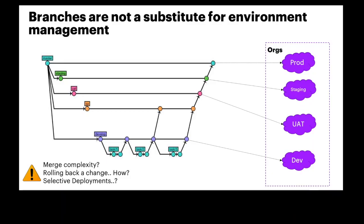A typical pattern we have seen across most Salesforce programs is basically using branches for orgs. So who is using source control with this model? We have seen this model where you have a developer branch which is directly pointed to a dev org, then you have a QA branch which is pointing to a QA org, and each environment is tied to a branch.